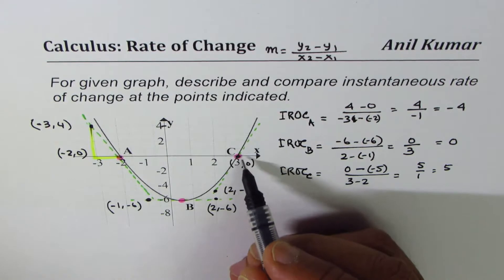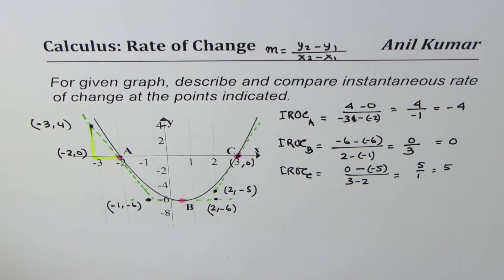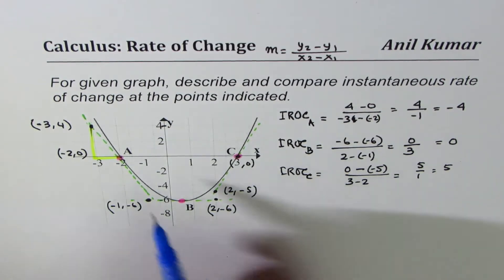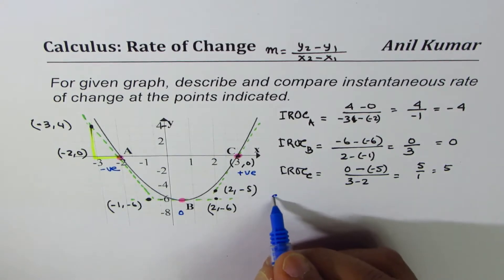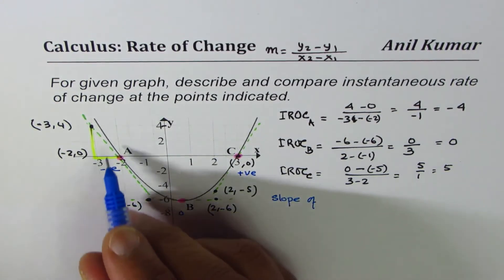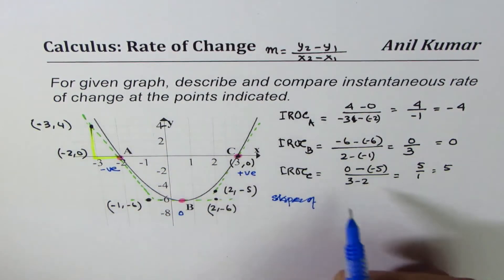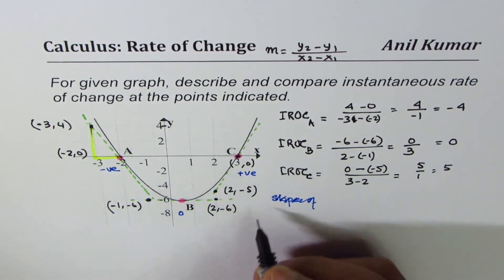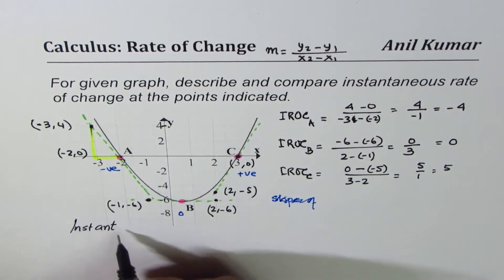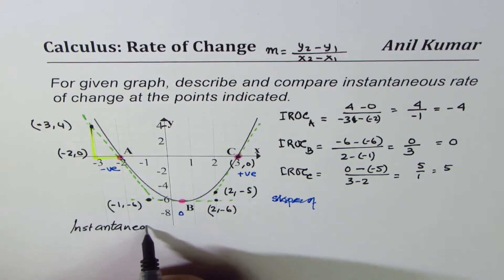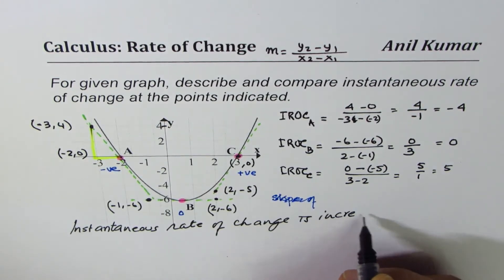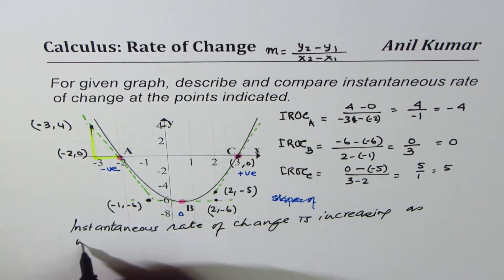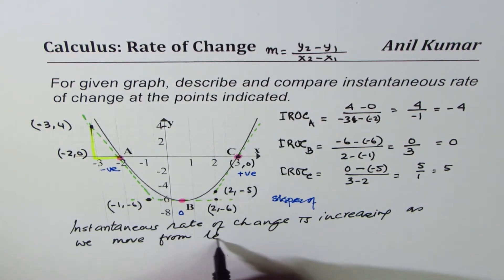We've now found the instantaneous rate of change at all three points. Comparing them, we notice the slope is negative at A, zero at B, and positive at C. So the instantaneous rate of change is increasing as we move from left to right along the curve.